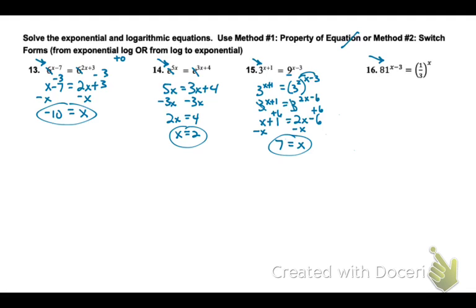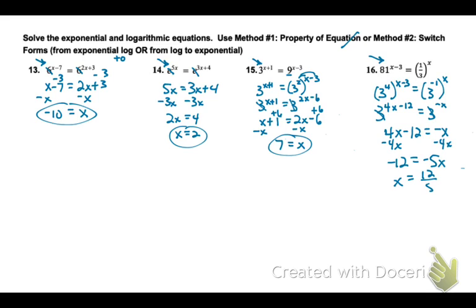On number 16, solving an exponential, 81 and 1 third. I notice the 3 and 1 third, and 81 is a power of 3. I can raise 3 to the fourth power and get 81. I can rewrite 1 third as 3 to the negative 1 power because that flips it. Now I'm going to raise a power to a power by multiplying. Then I'm going to ignore my bases. So 4x minus 12 equals negative x. I'm going to subtract my 4x. Negative 12 equals negative 5x. Divide both sides by negative 5. x equals 12 fifths.